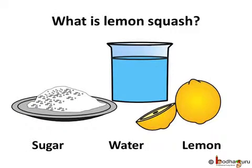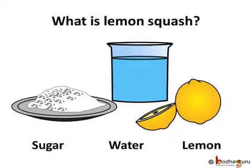What is lemon squash made of? It is quite simple to make it. Cut and squeeze a lemon to get its juice, add sugar and water to it. So, a few things or substances are mixed together to form a mixture. Here, it is lemon squash. The lemon squash consists of three different substances — lemon juice, water and sugar.